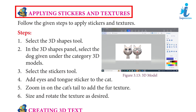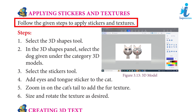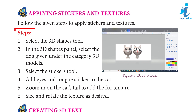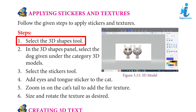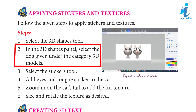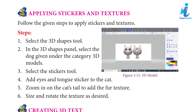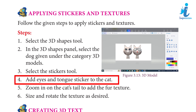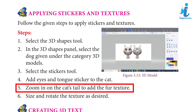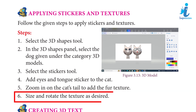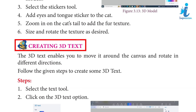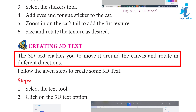Applying Stickers and Textures. Follow the given steps to apply stickers and textures. Steps: 1. Select the 3D shapes tool. 2. In the 3D shapes panel, select the dog given under the category 3D models. 3. Select the stickers tool. 4. Add eyes and tongue sticker to the cat. 5. Zoom in on the cat's tail to add the fur texture. 6. Size and rotate the texture as desired.